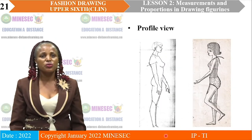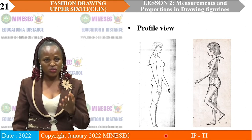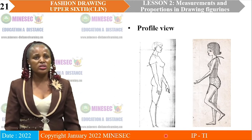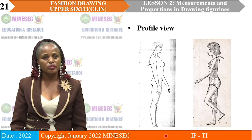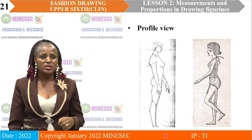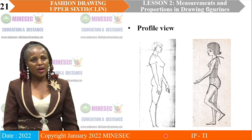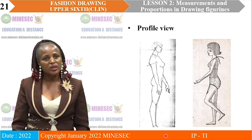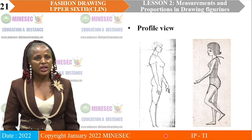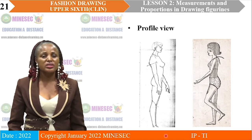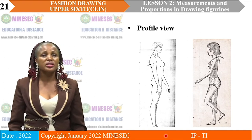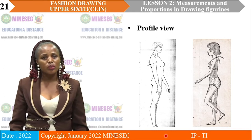Here we also have the profile view figurine. Most of the time, when you ask students to present this profile view, they may not really know what it is talking about. The profile view figurine here shows that the figurine shows half of the body — the eye is just half, half nose, half mouth, and you are seeing just one breast. The other hand from behind is showing just a bit, while you have a full hand this way. It shows you that the body is half as a profile view figurine.